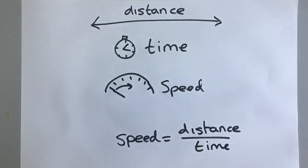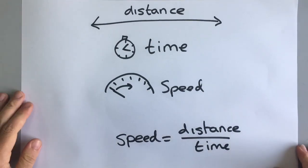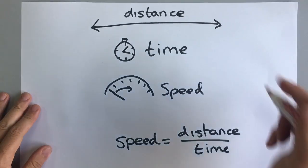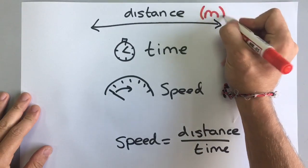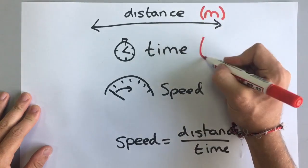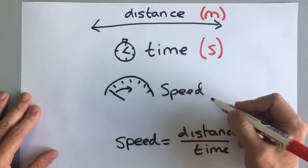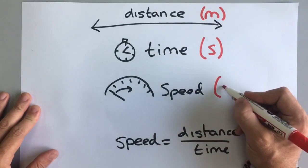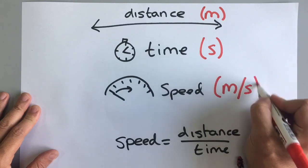It's very important that we don't use unusual measurements for these things. So we always measure distance in meters, we always measure time in seconds, and we always measure speed in meters per second.